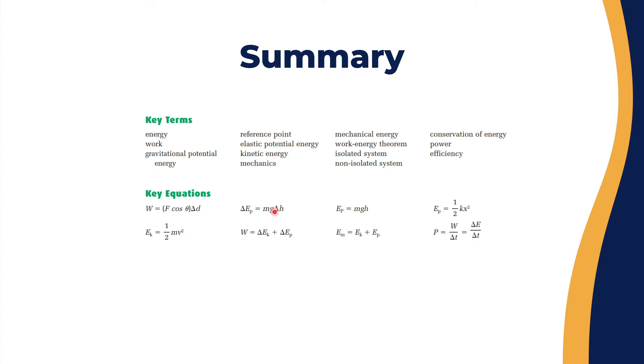Delta E potential would be mg delta h, and E potential would equal mgh. E potential for a spring is one over two k times x squared, and k here is the spring constant.